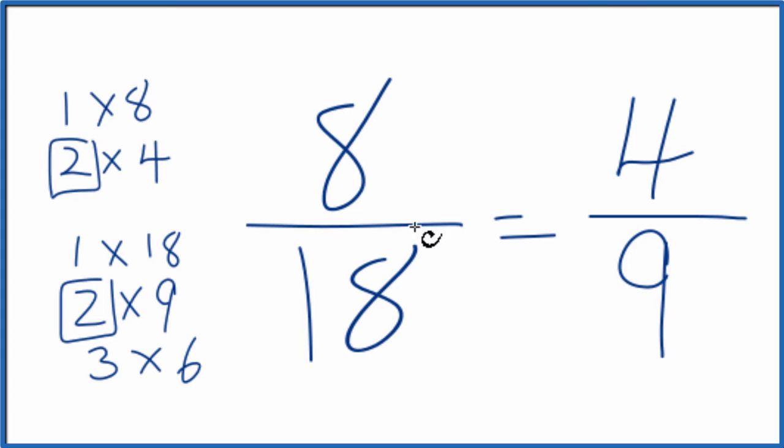So we've simplified 8/18 down to 4/9. And we can't simplify this any further. It's in lowest terms.